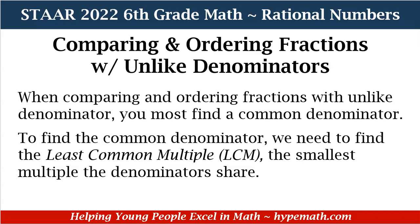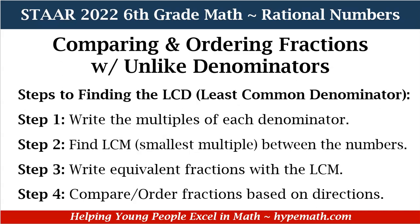When comparing and ordering fractions with unlike denominators, you must find a common denominator. To find the common denominator, we need to find the least common multiple, or the LCM, which is the smallest multiple the denominators share. Here are the steps to finding the LCM, or the LCD, the least common denominator.